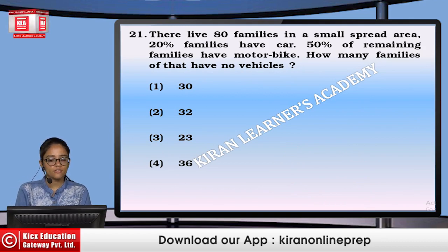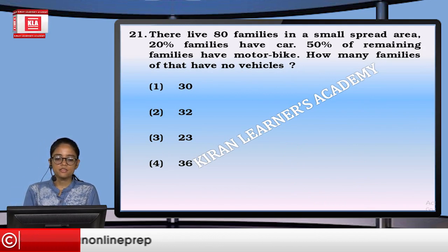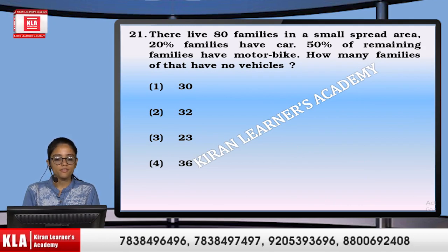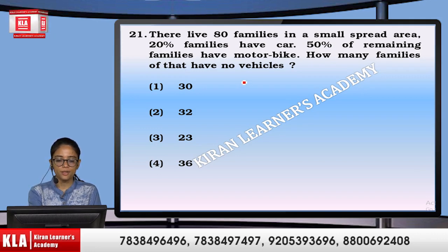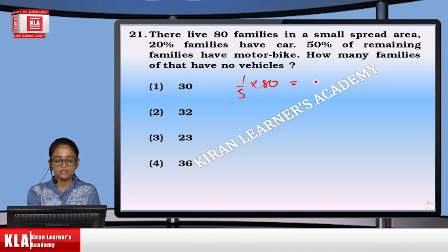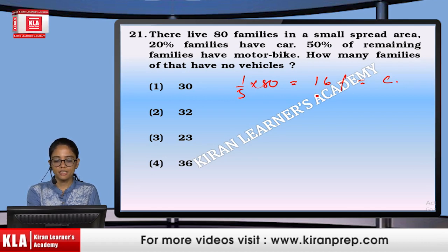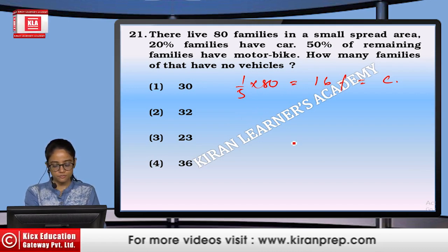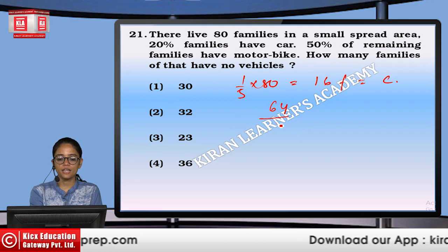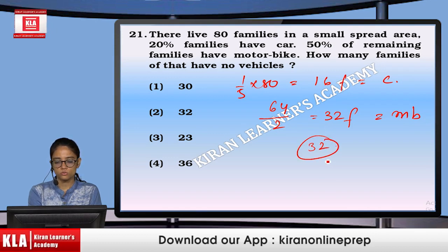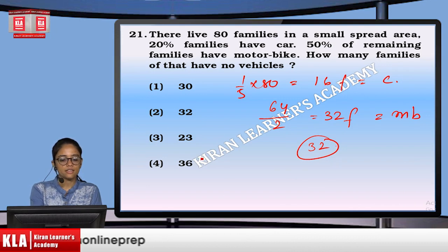There are 80 families in a small area. 20% of families have cars, meaning 16 families have cars. The remaining 64 families — 50% of them have motorbikes, meaning 32 families have motorbikes. So the remaining 32 families have no vehicles. That is option number 2 (32 families).